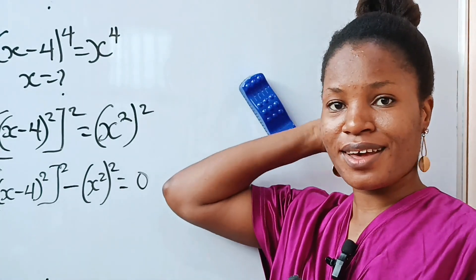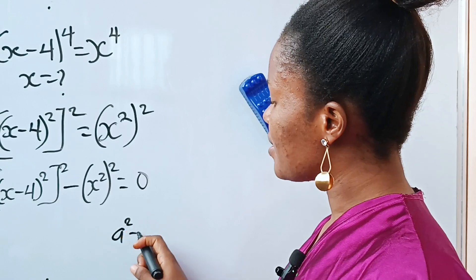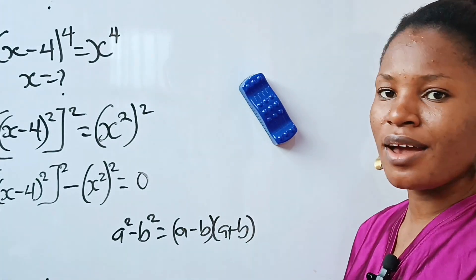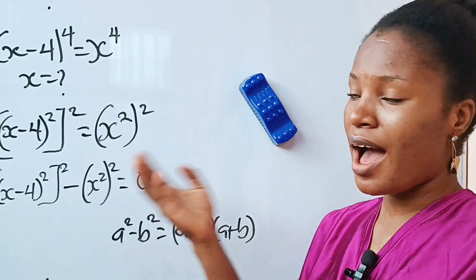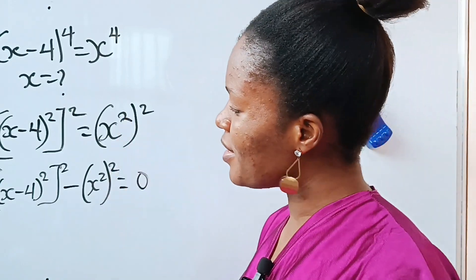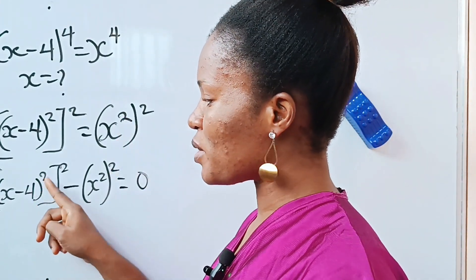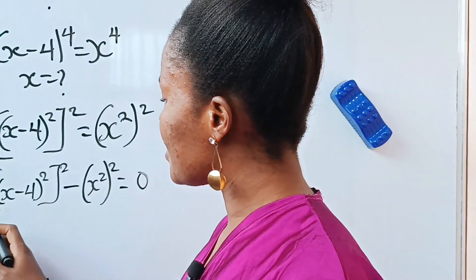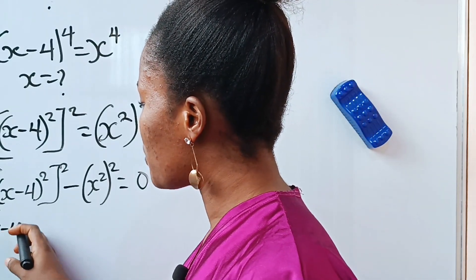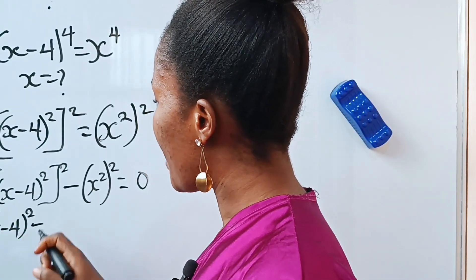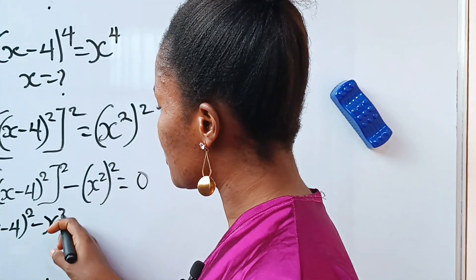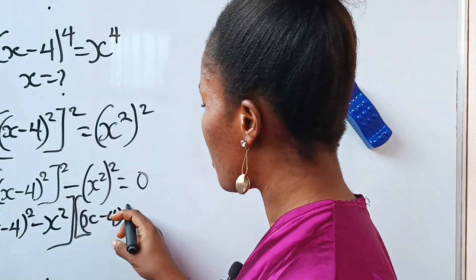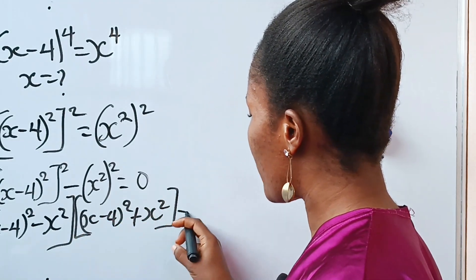We have difference of two squares here — the identity that says a squared minus b squared is equal to a minus b multiplied by a plus b. So we are going to apply that here. x minus 4 to the power of 2 is our a, and x squared is our b. That means we can rewrite the left hand side as x minus 4 squared minus x squared, multiplied by x minus 4 squared plus x squared, is equal to 0.